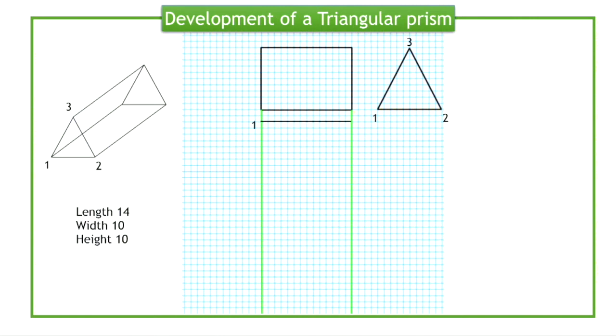The length of the corresponding sides are transferred, with the help of compasses, to get point 2.